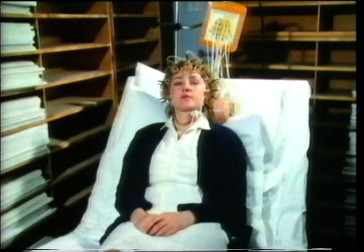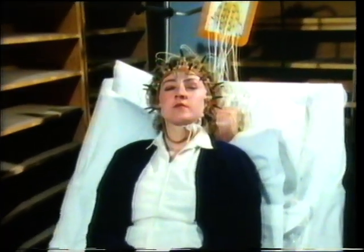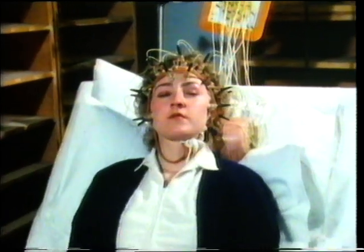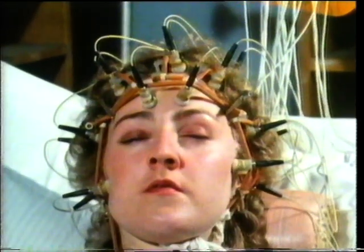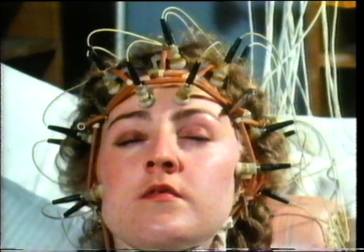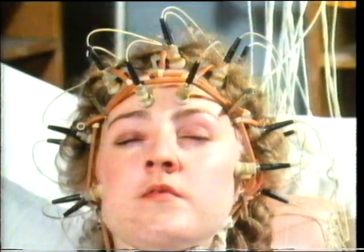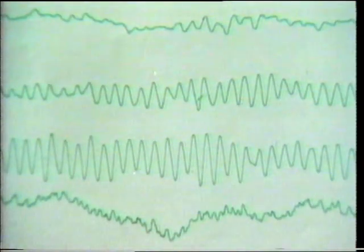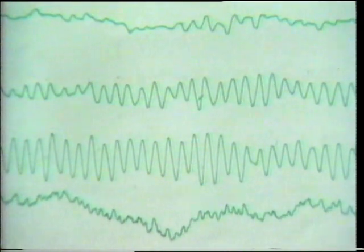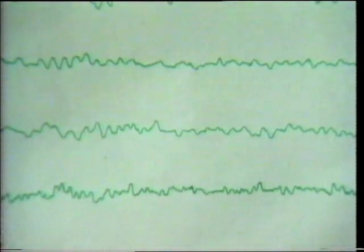What this shows is that electrical changes occur in the brain when it's doing something — in this case receiving information through the eyes. When they're shut, we get this pattern, which changes when she opens her eyes.